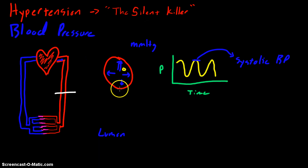In between beats, the pressure doesn't go to zero. There's still pressure inside the lumen, pressure on the walls. But that low point of the graph — also known as the nadir of the graph — is the diastolic blood pressure. These are the two pressures that we measure when we take a person's blood pressure.